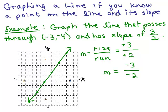Now we graph the line by connecting the dots. Drawing the line, we check: does it pass through negative 3, negative 4? Does it look like it has a slope of positive 3 halves? Yes. Let's do another one.